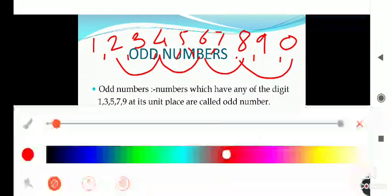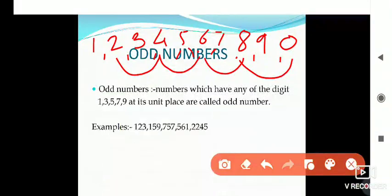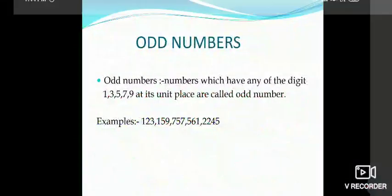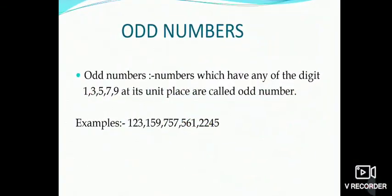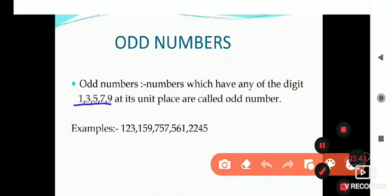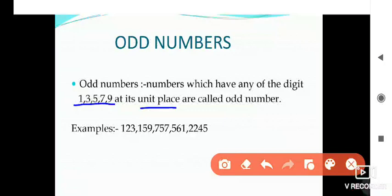And the numbers 1, 3, 5, 7, 9 — if these odd digits are present at the unit place, then the number is called an odd number. The definition: numbers which have any of the digits 1, 3, 5, 7, 9 at the unit place are called odd numbers.